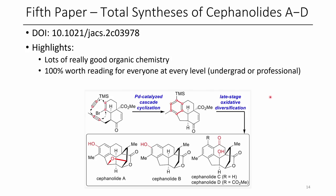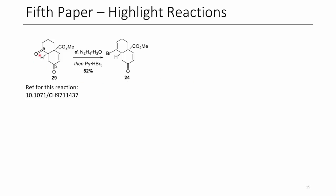The last paper is a total synthesis paper. While not too focused on the biological activity of the products, there's a lot of really good chemistry in this paper. In the first reaction highlighted, they convert a ketone to a hydrazone, then treat it with pyridinium tribromide to afford a vinyl bromide — a cool reaction from an obscure 1971 paper. Notably, they selectively form the hydrazone on that ketone in the presence of another ketone, and without brominating a nearby alkene — quite an impressive transformation.